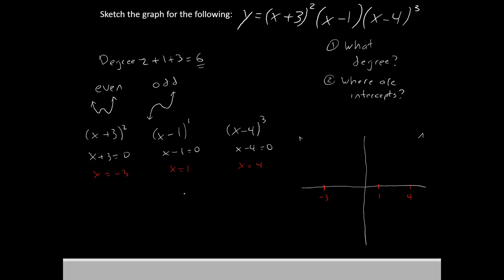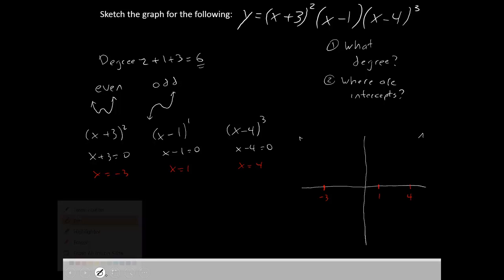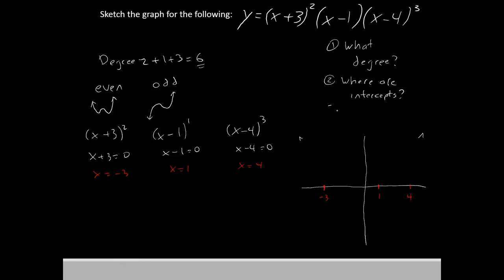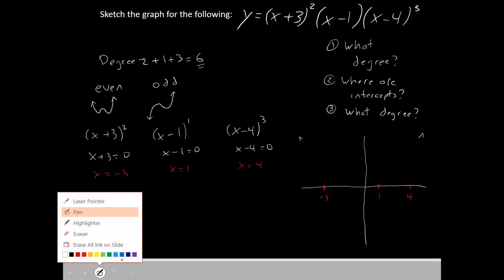We also have to pay attention to what degree they all are. That will be our third step. The degree each piece is will change how it crosses the axis. Alright, so let's have a look.